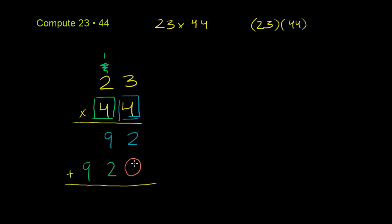Let's add them up. 2 plus 0 is 2. 9 plus 2 is 11, carry the 1. 1 plus 9 is 10. Put a comma here just so it's easy to read, every third digit. So 23 times 44 is 1,012.